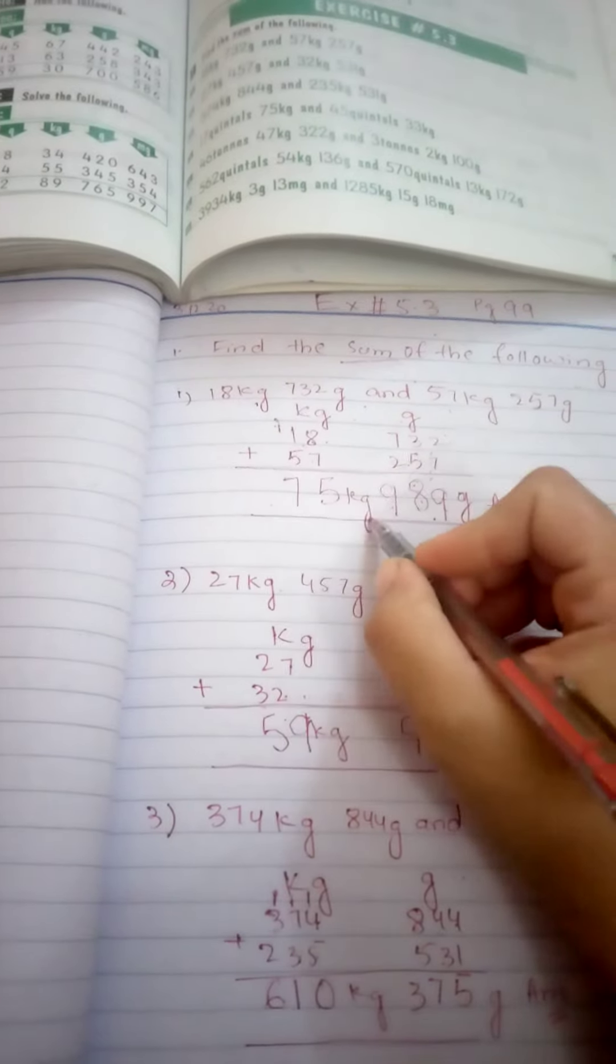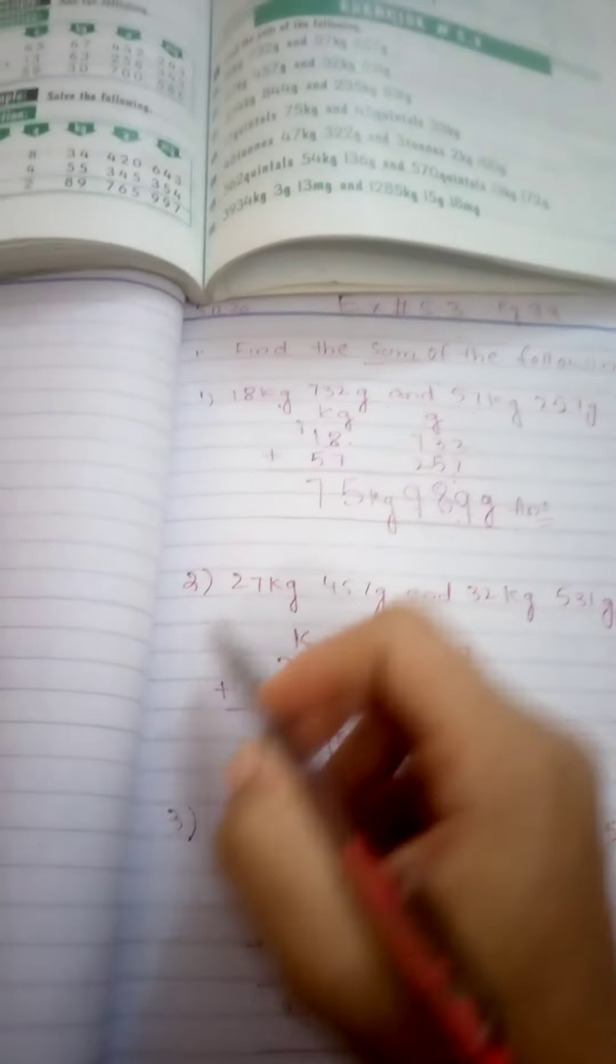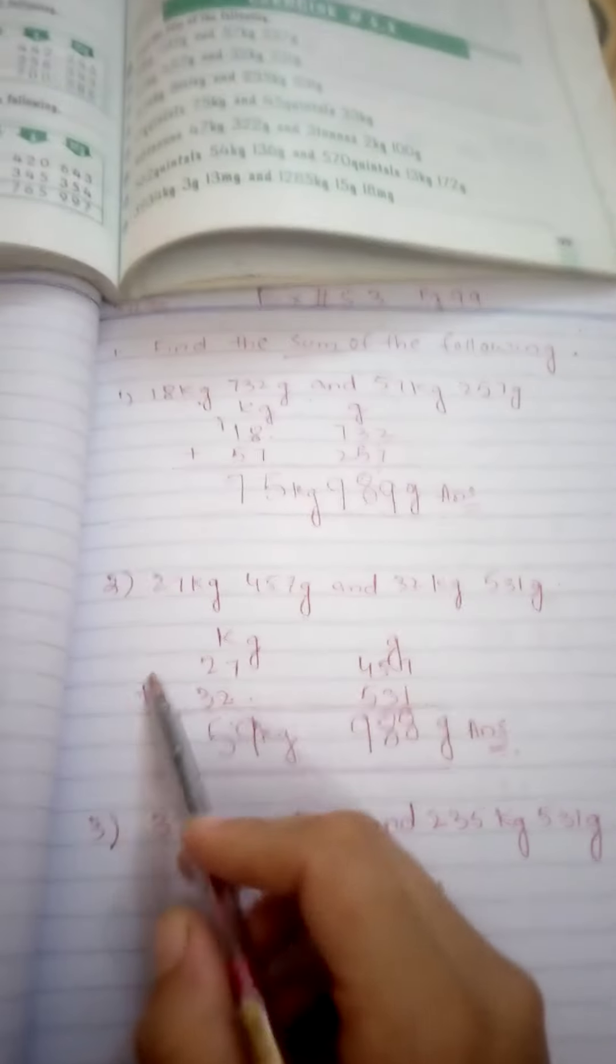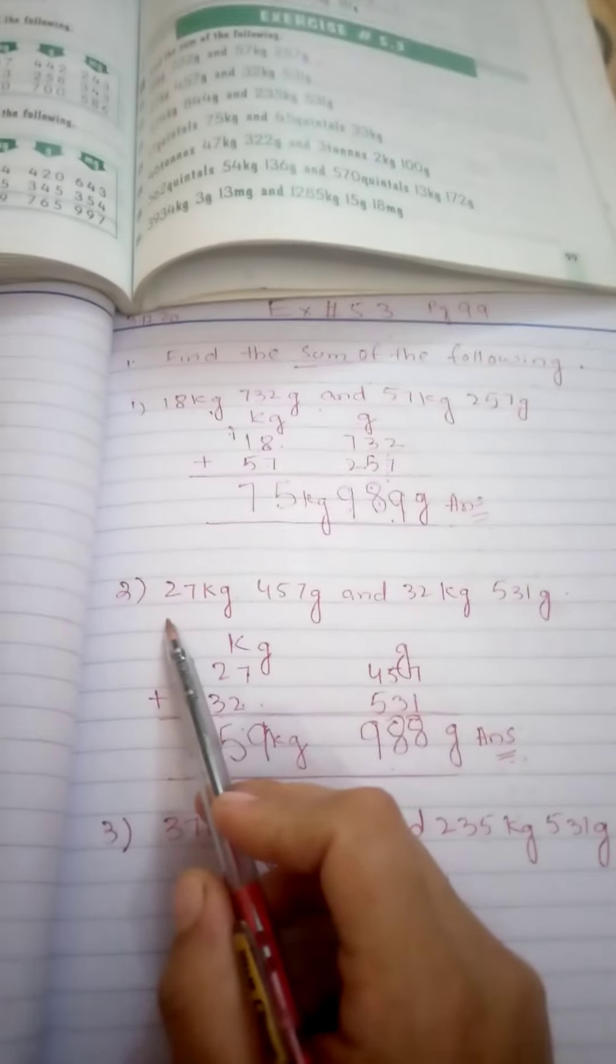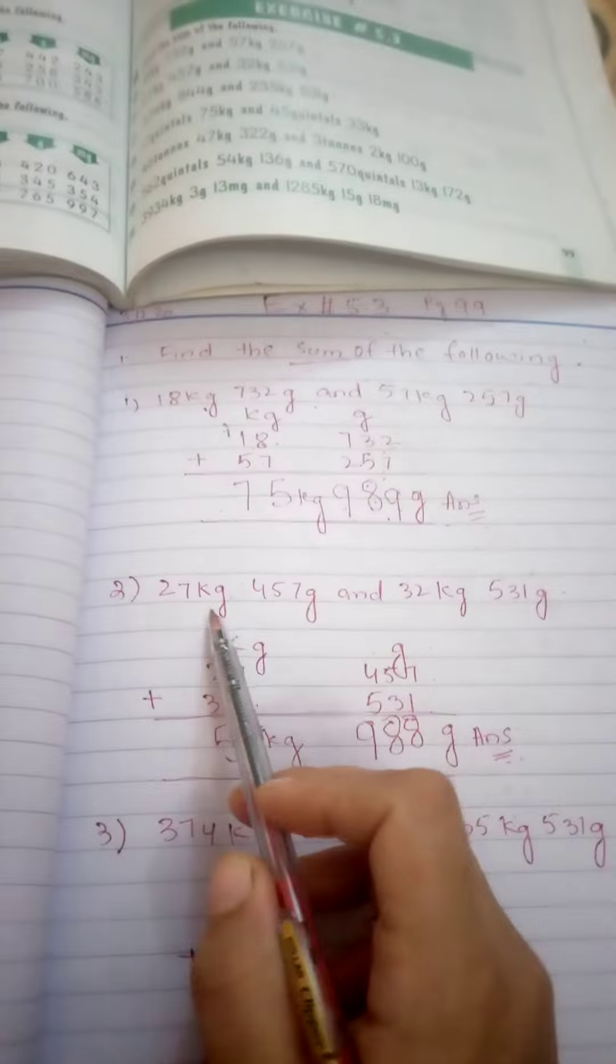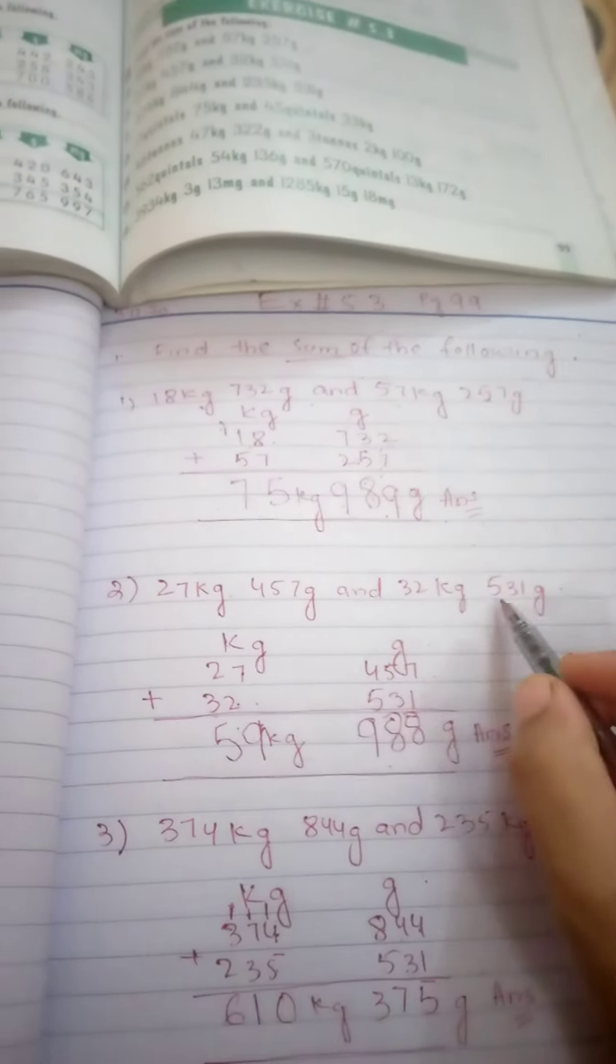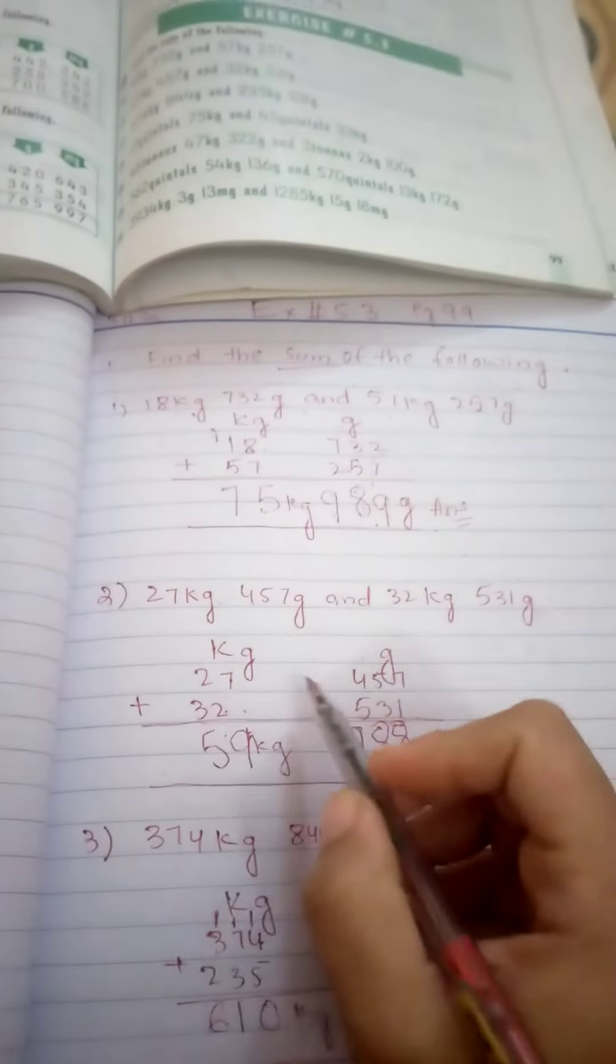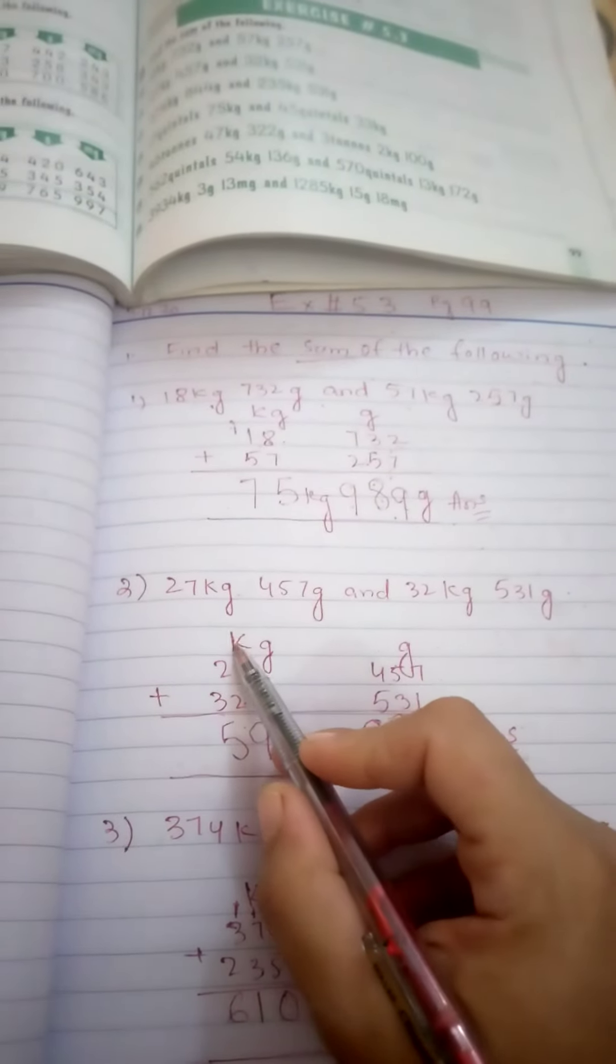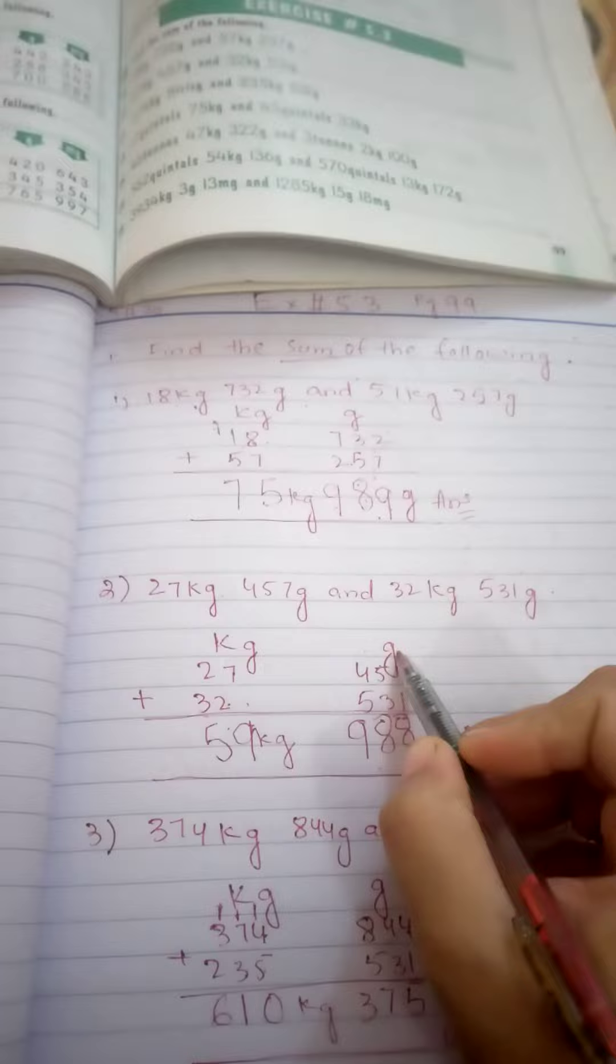So we write 75 kg and 989 grams. Now we do question number 2. Question number 2 is 27 kg 457 grams and 32 kg 531 grams. Again, we write the unit of measurement: kg and grams.